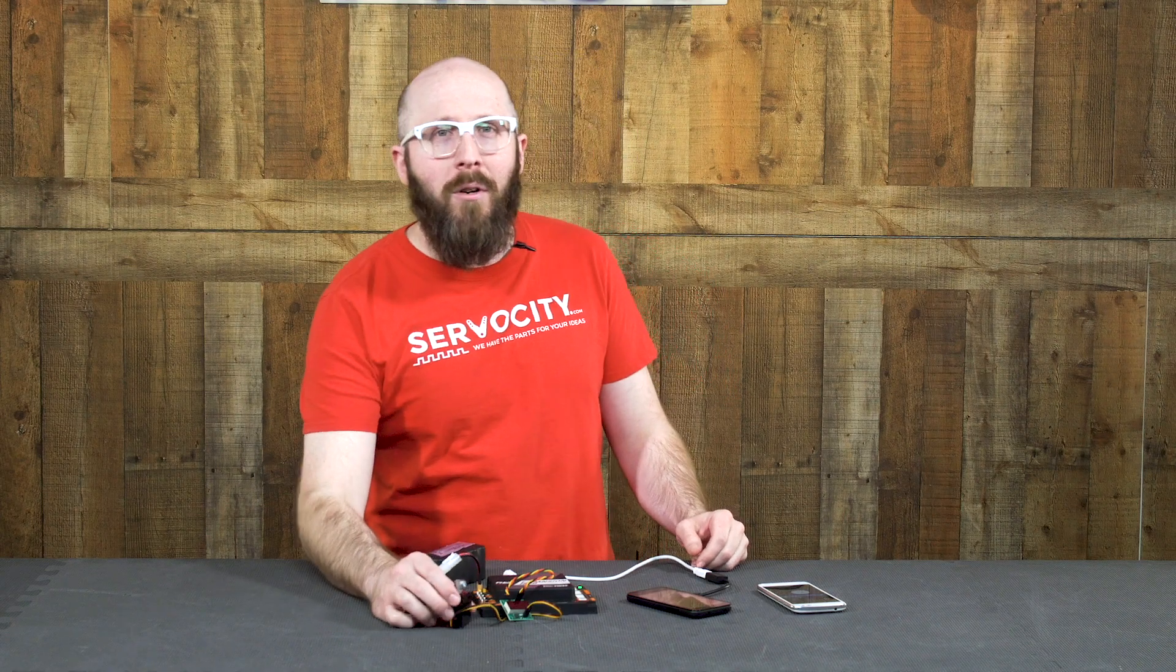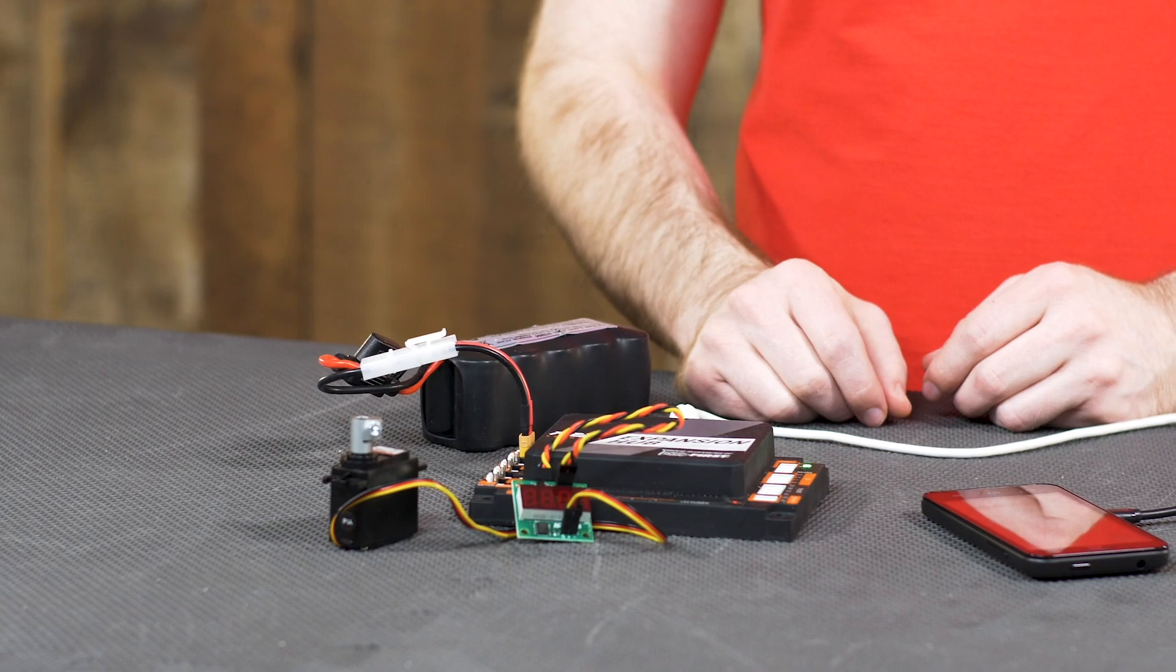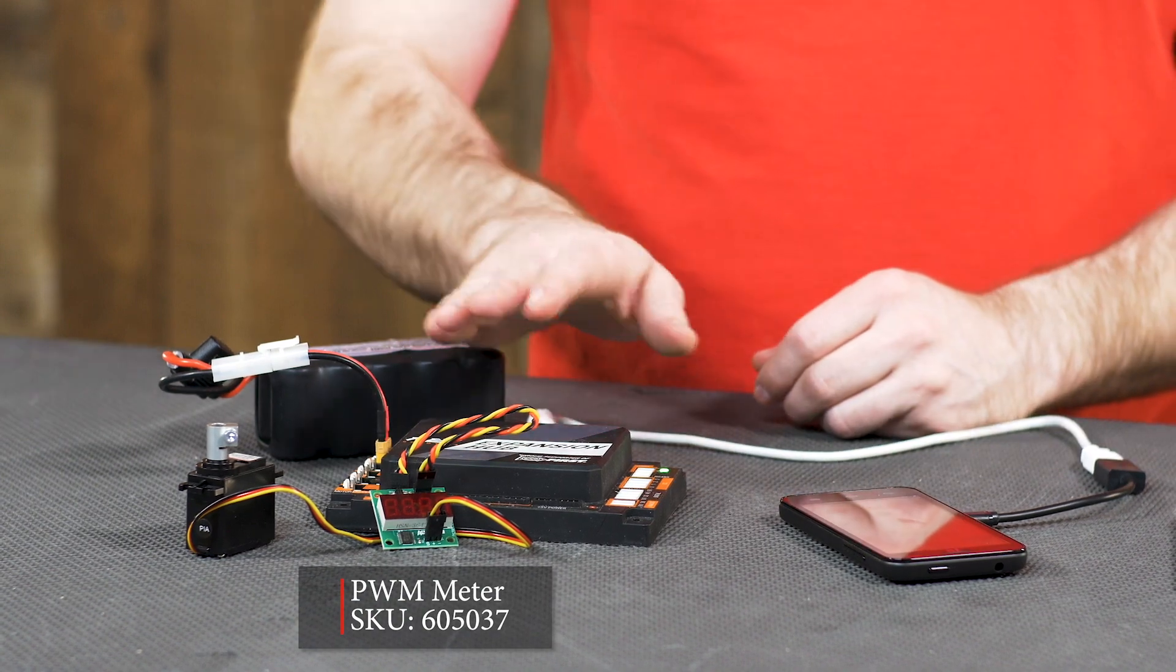...let's take a look at what it looks like with this HS48HB. I've got a clamping servo-to-shaft coupler on there to make it easier to see where it's set within its rotation, and I also have a PWM meter that I'm using in line here between the expansion hub and the servo.